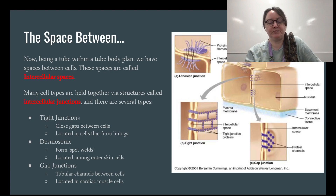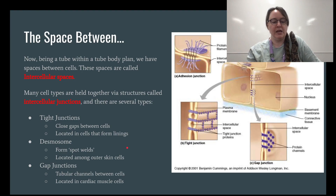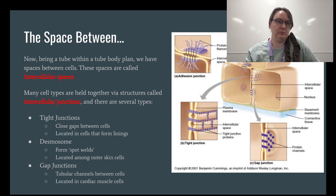Desmosomes form spot welds and are usually located among the outer skin. In the next chapter we're going to talk about how cells slough off all the time — about 98% of all house dust is actually your own skin. There wouldn't be any dust in your house if you weren't in it.